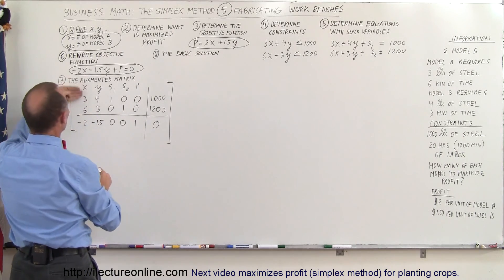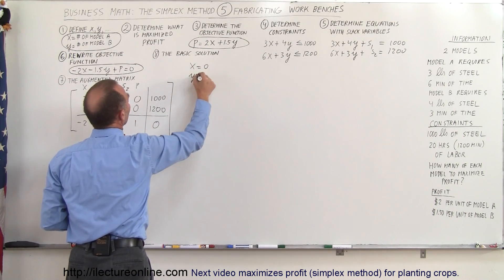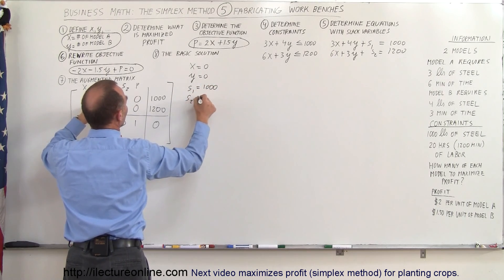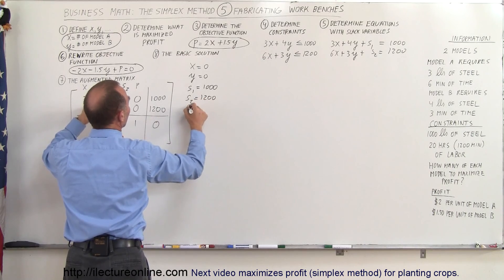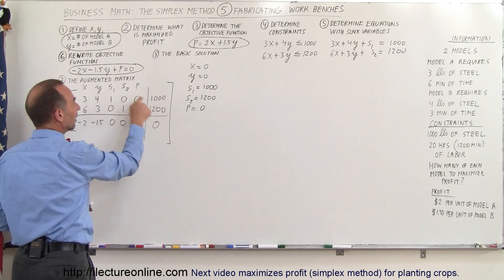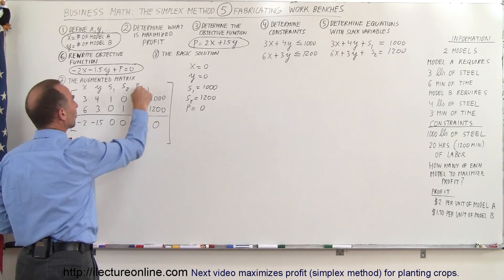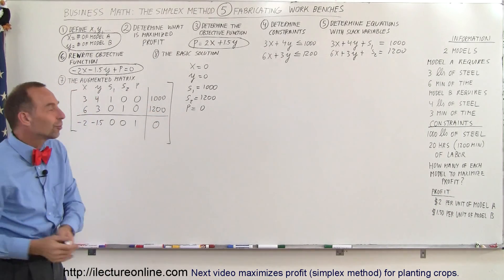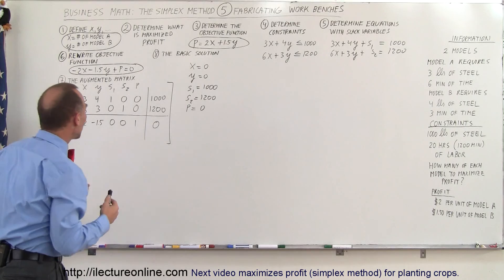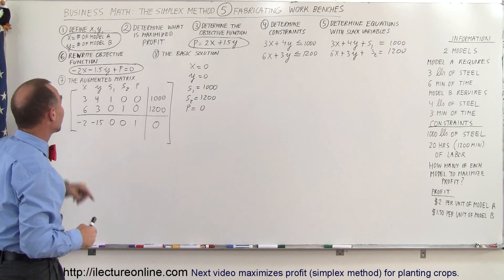The basic solution says that because we don't have 1s and 0s under the x and y columns, x equals 0 and y equals 0. Our first slack variable s1 equals 1,000, our second slack variable s2 equals 1,200, and the profit equals 0. So zero profit is made because we're not making any of either Model A or B. Now we want to find the pivot point to start solving for x and y.